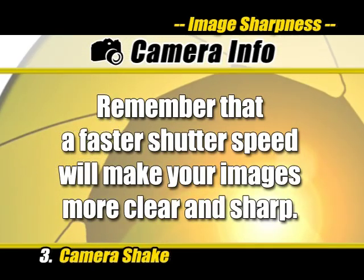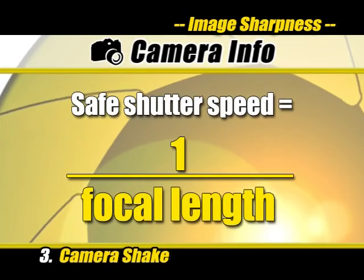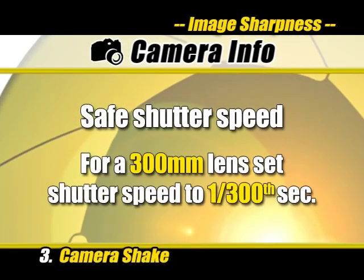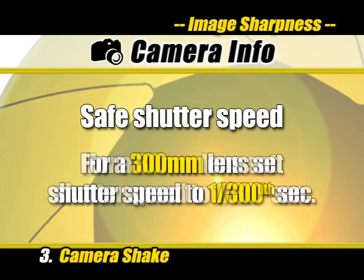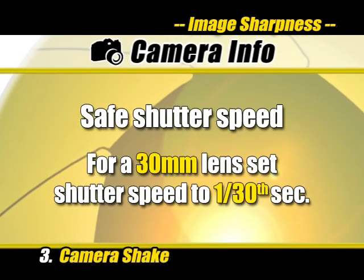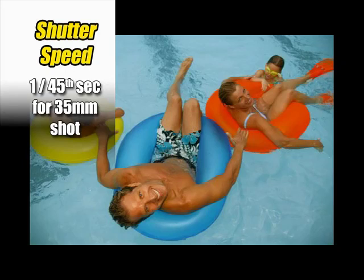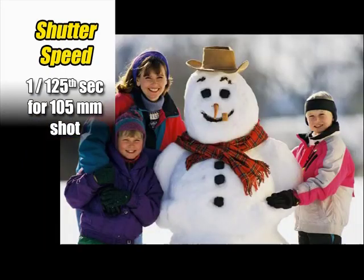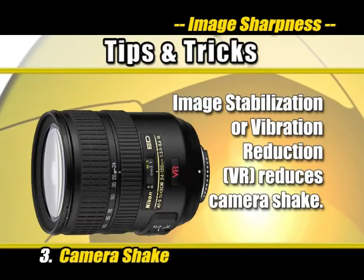One general rule of thumb is the rule of one over the focal length. For example, if your lens focal length is 300mm, set your shutter speed to at least 1/300th of a second. If your focal length or zoom is set to 30mm, you may get by with a shutter speed as low as 1/30th of a second or so. Nikon's image stabilizer lenses do a remarkable job of taking out camera shake automatically.